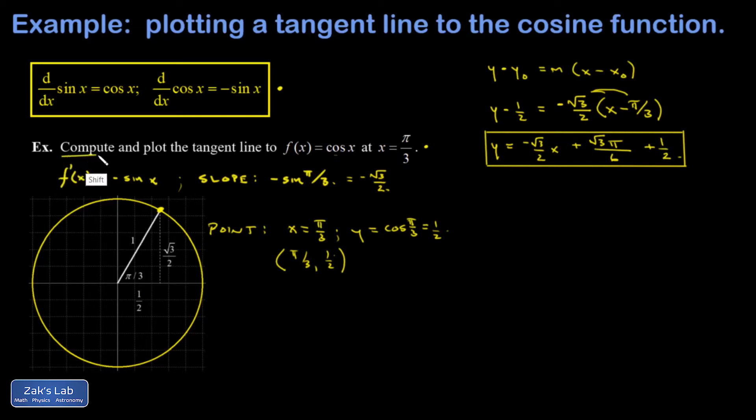So we've done the first thing we were asked to do. We computed the tangent line to the cosine curve at x equals pi over 3. But the second thing we want to do is make a plot of the cosine function and a plot of the tangent line to verify that it only touches at one point and that it looks roughly like pi over 3. So I'm going to bring in a picture of that real quick.